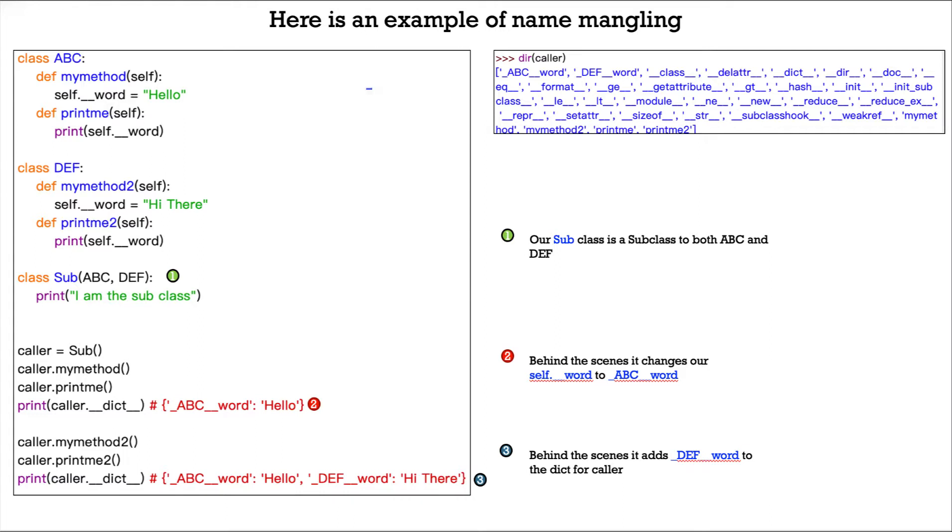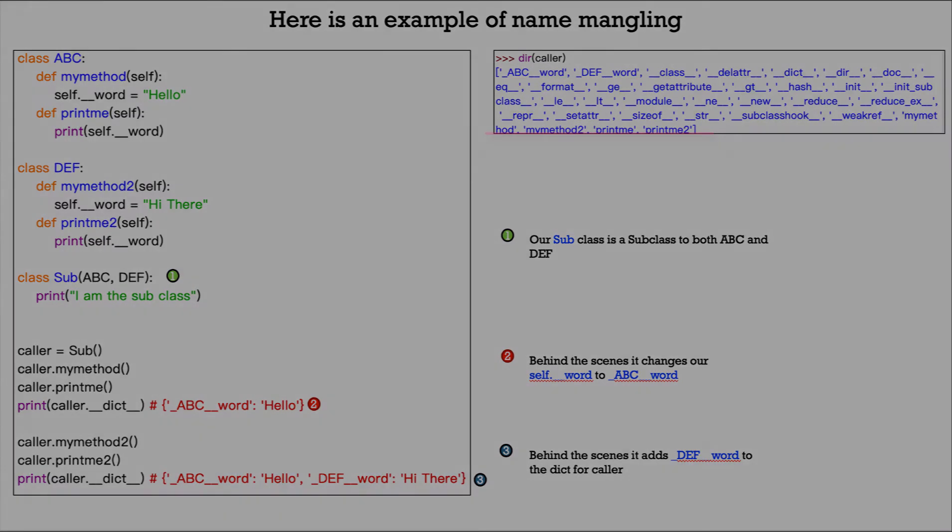Now look here, up at the top right-hand corner. When I do a dir on caller, we see that it is retained there in that method's output just as we printed it out: single underscore ABC double underscore word, single underscore DEF double underscore word, along with our other methods down at the bottom. So it works just as expected.